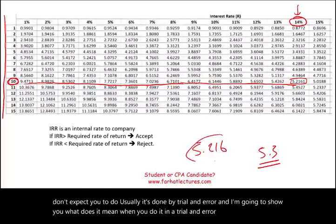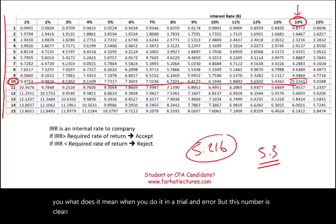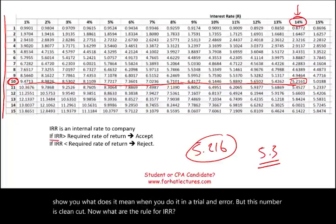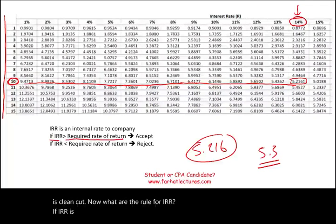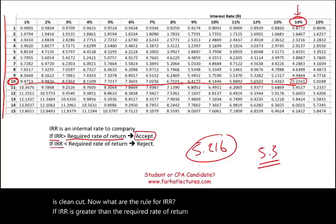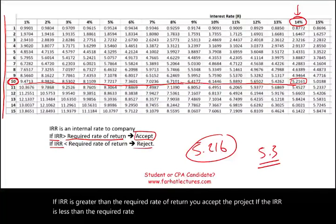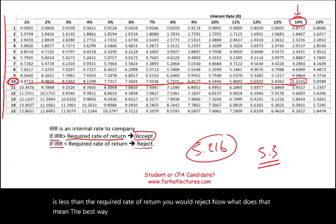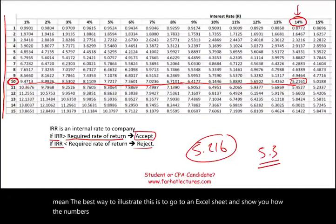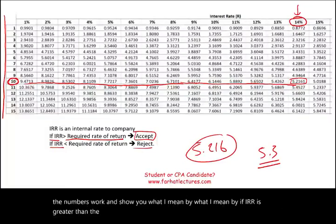Now, what are the rules for IRR? If IRR is greater than the required rate of return, you accept the project. If the IRR is less than the required rate of return, you would reject. The best way to illustrate this is to go to an Excel sheet and show you how the numbers work — what I mean by IRR being greater than or lower than the required rate of return. So let's go to the Excel sheet.